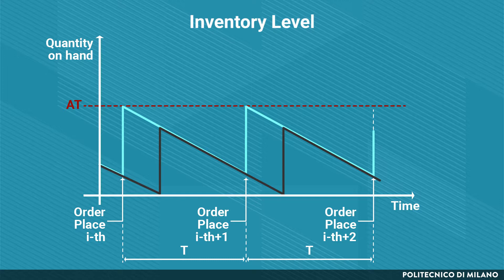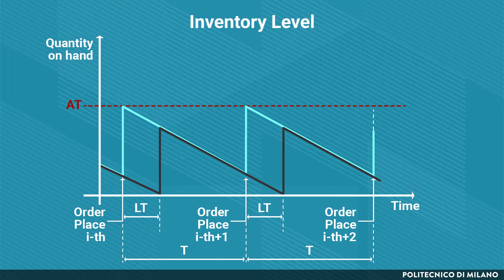The inventory level increases when the order is received, not when the order is issued. The horizontal distance is therefore equal to the replenishment lead time. Vertically, the maximum inventory level is lower than the maximum availability, since some stocks have been consumed during the replenishment lead time.